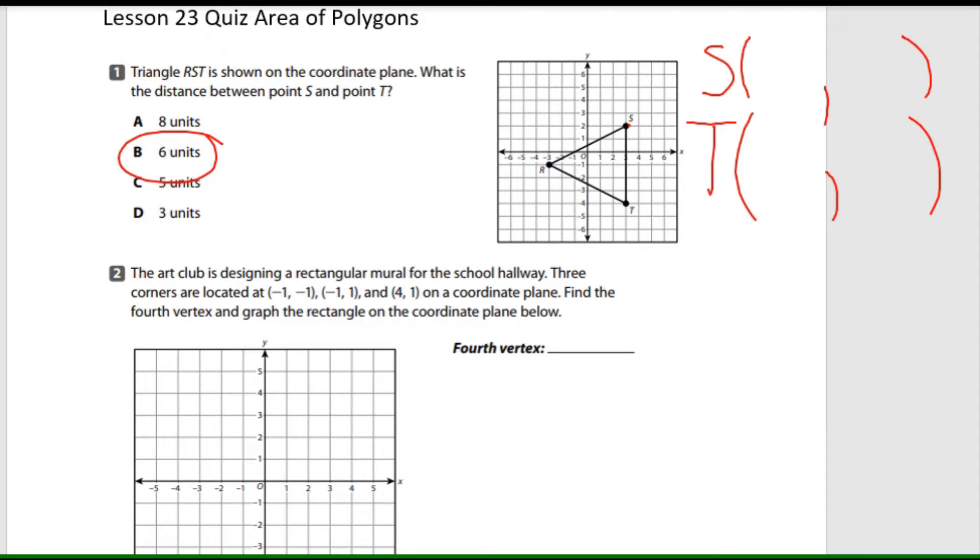S, X always go first before Y. So you get the X coordinate and S is directly on three, so it's going to be three. The Y coordinate for S is two. So that's going to be three and two for S. And T, X coordinate is going to be three, and the Y coordinate is going to be negative four.